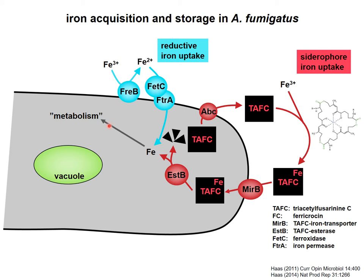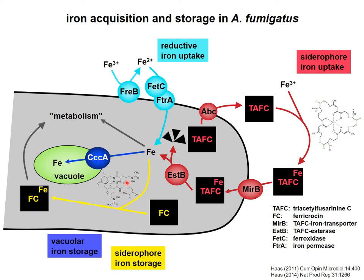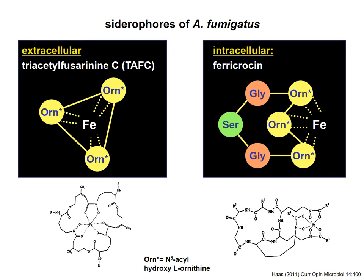Within the cell, the iron is then used in the metabolism. Excessive iron can be transported into the vacuole for detoxification, or alternatively it can be stored in an intracellular siderophore which is called ferricrocin. Here you can see how the major siderophores of Aspergillus fumigatus look like. The extracellular siderophore TAF-C is an atypical tripeptide consisting of three modified ornithine residues, while the intracellular siderophore is an atypical cyclic hexapeptide, again consisting of three modified ornithine residues which chelate the iron, and three additional amino acids. These siderophores have a molecular mass of less than 1 kDa.